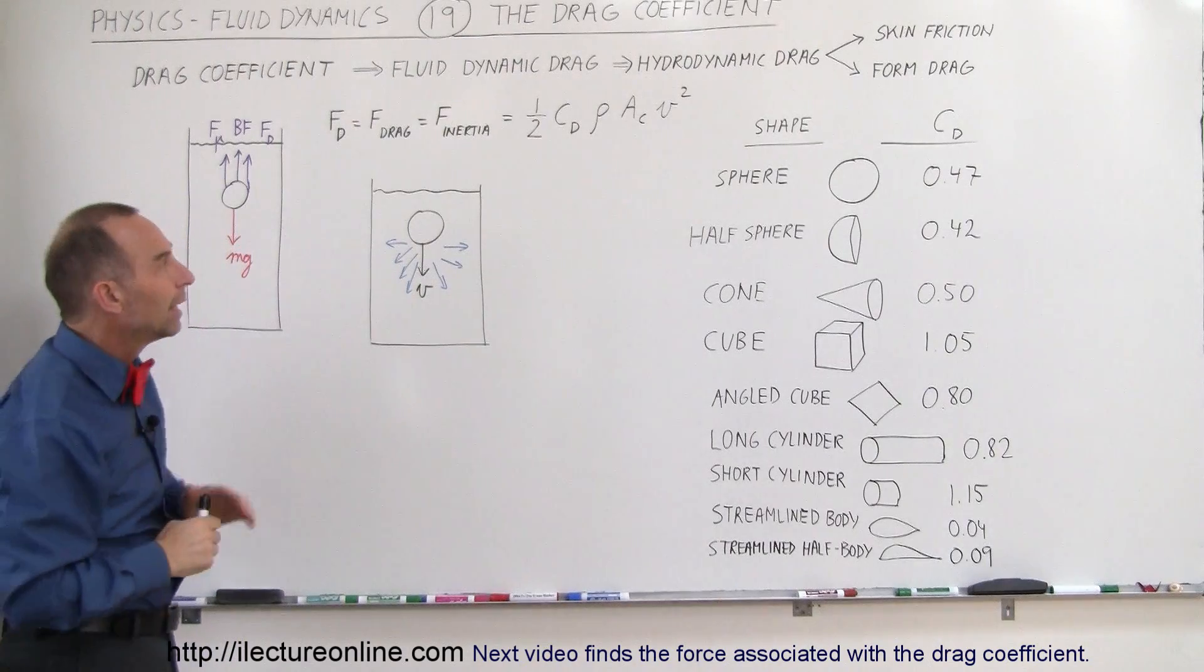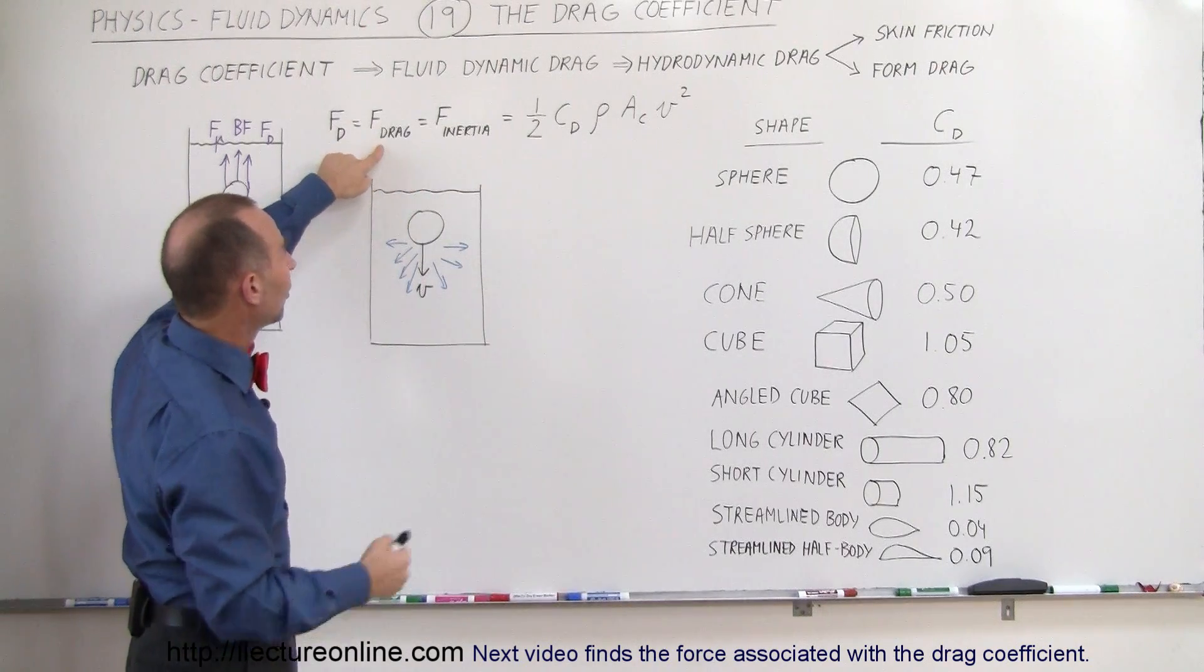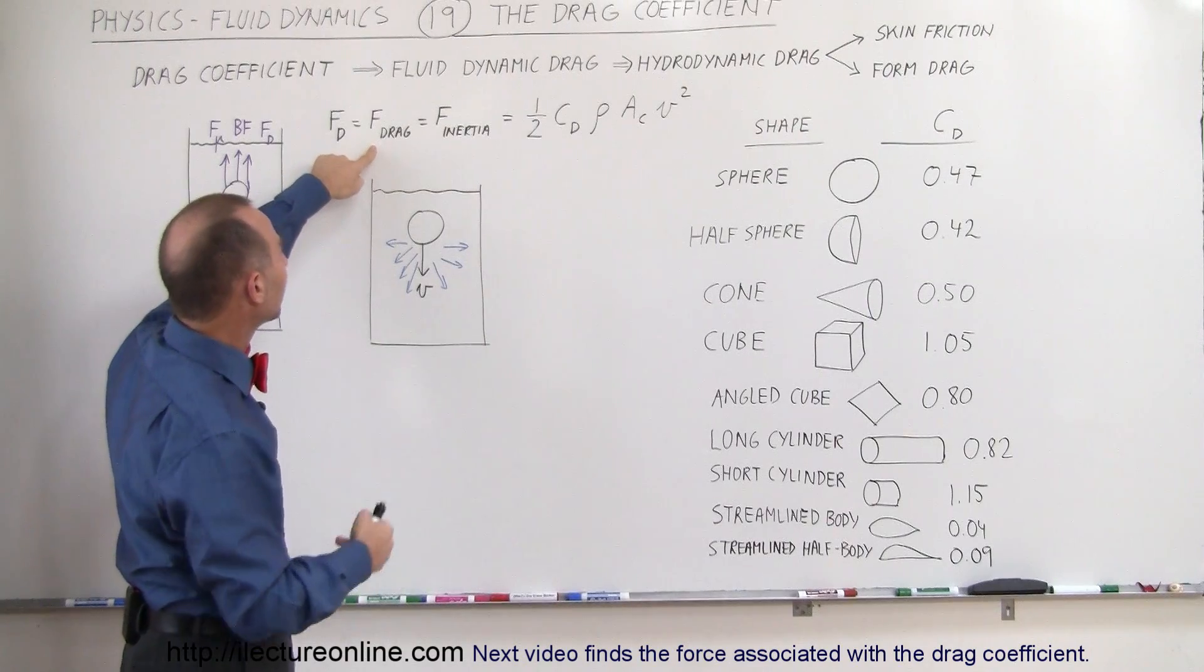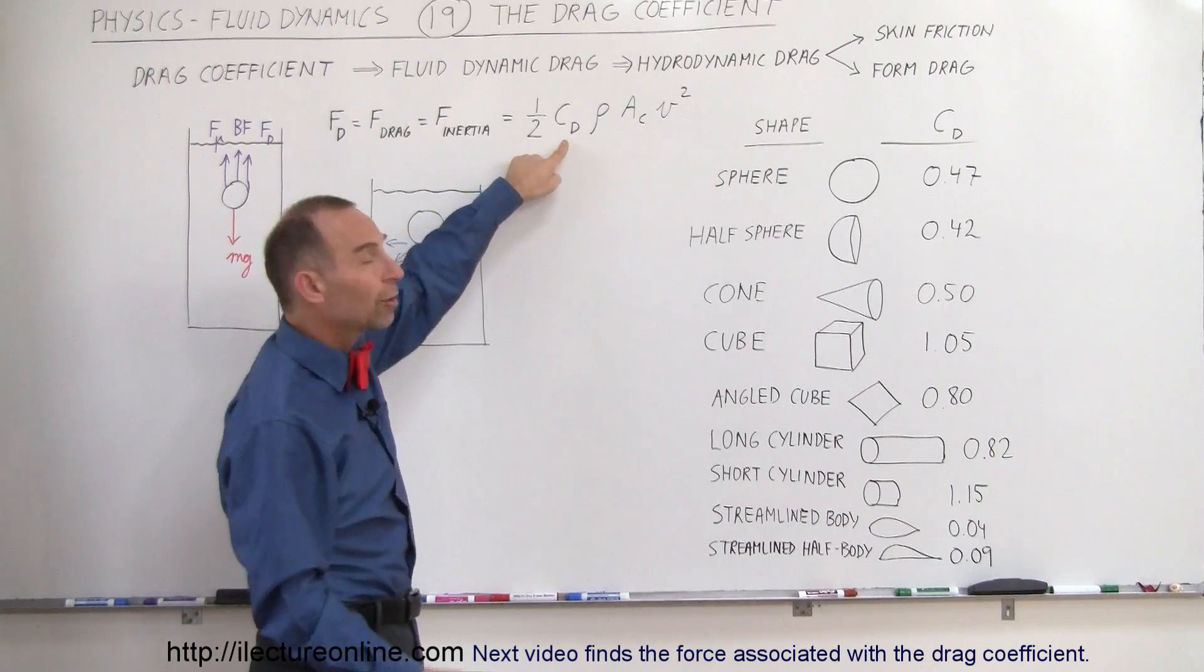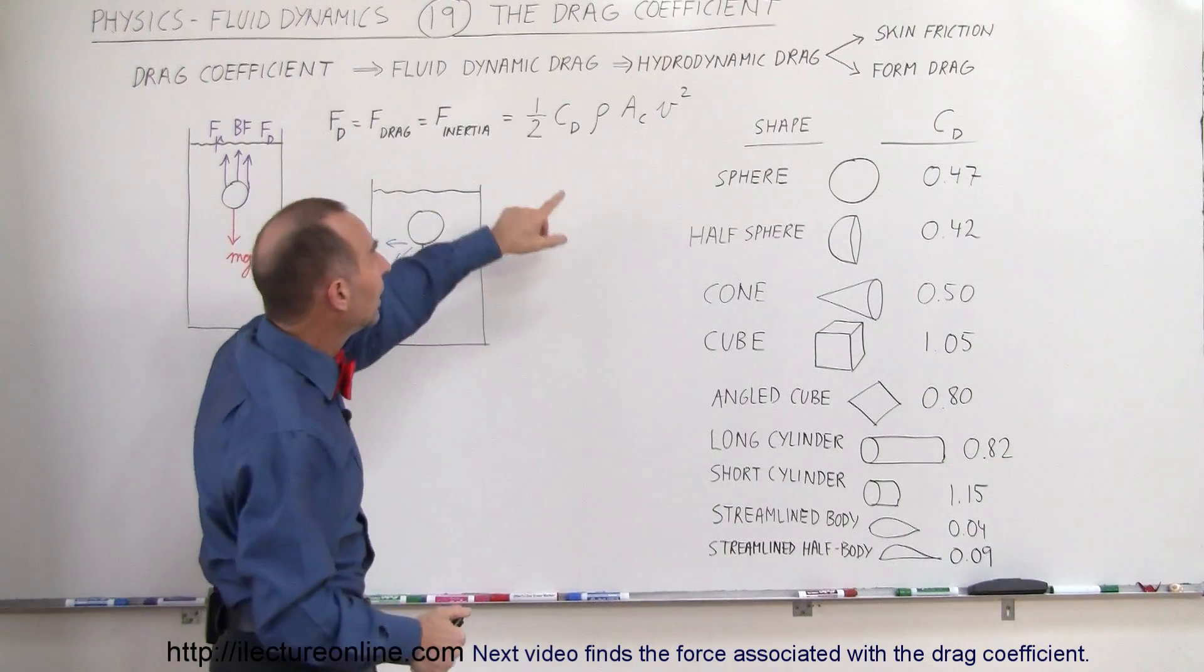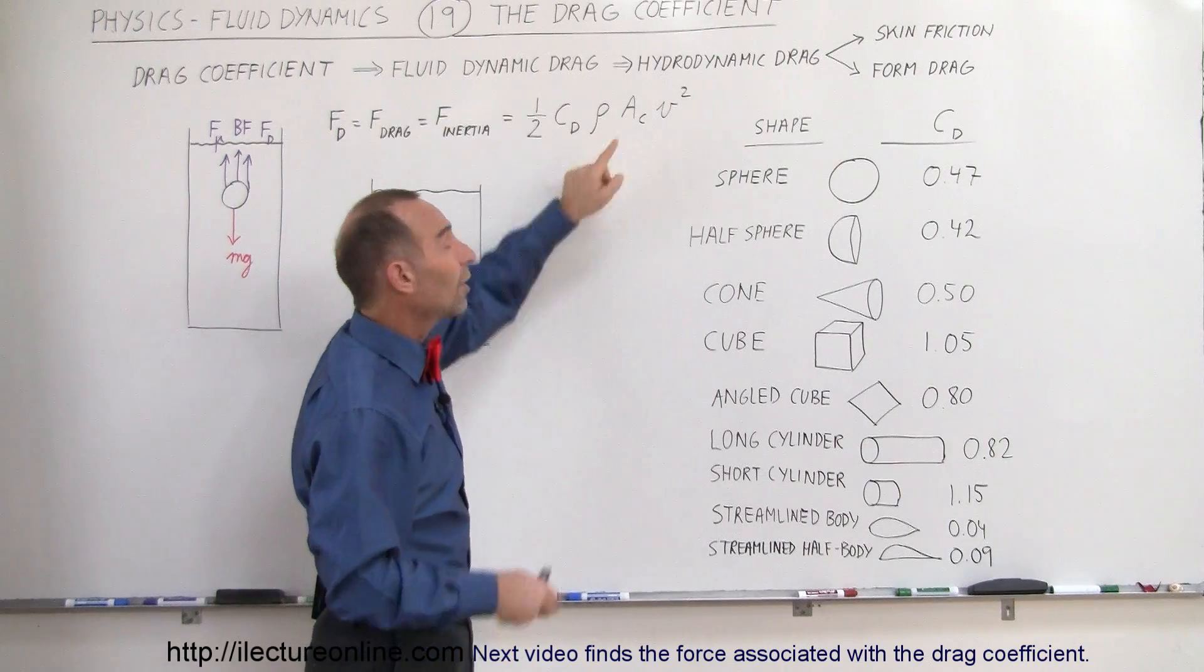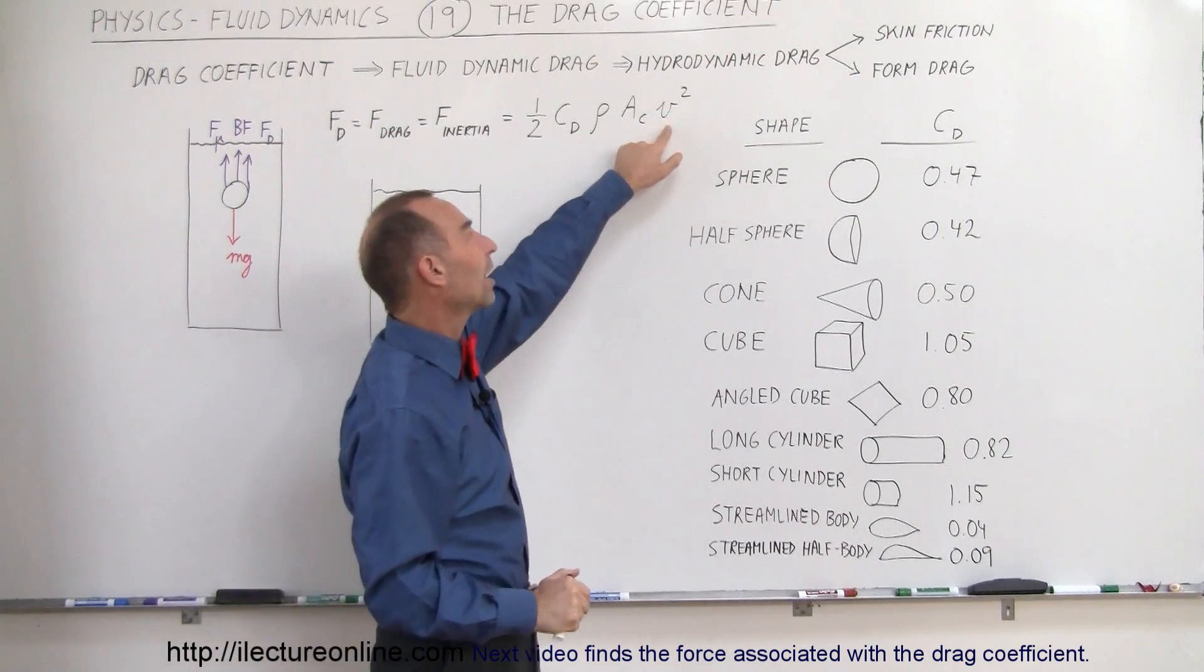If we take a look at the equation where we have the force associated with the drag coefficient, it's equal to one half times the drag coefficient. By the way the drag coefficient is just a number without any units to it. The density of the fluid, the cross sectional area of the object slicing through the fluid and then the velocity squared.